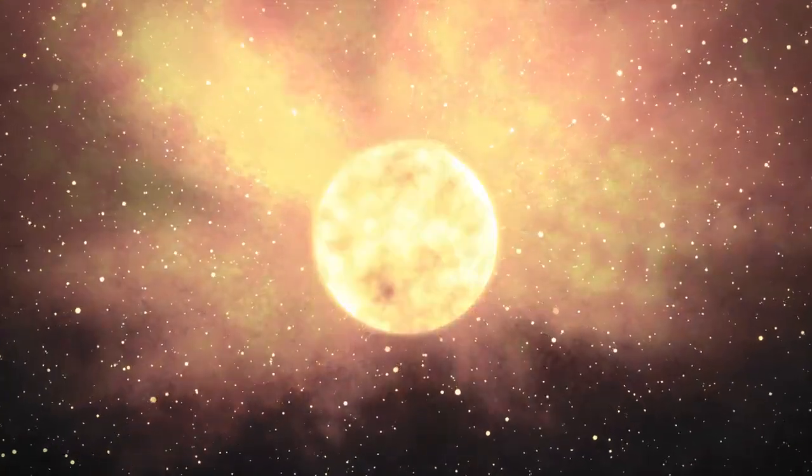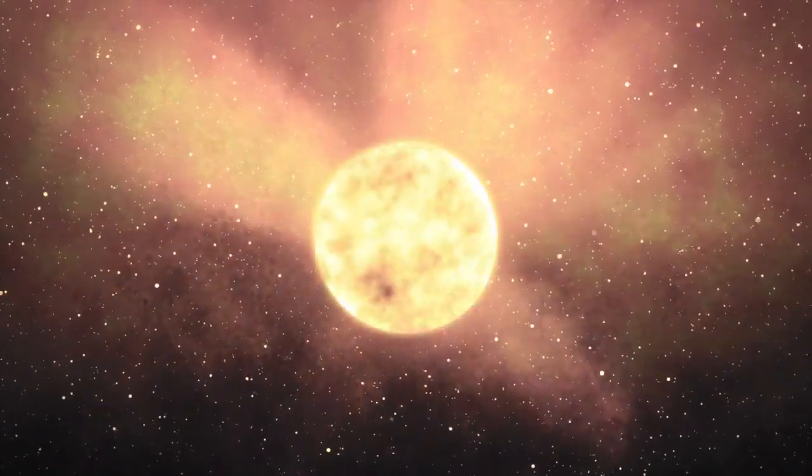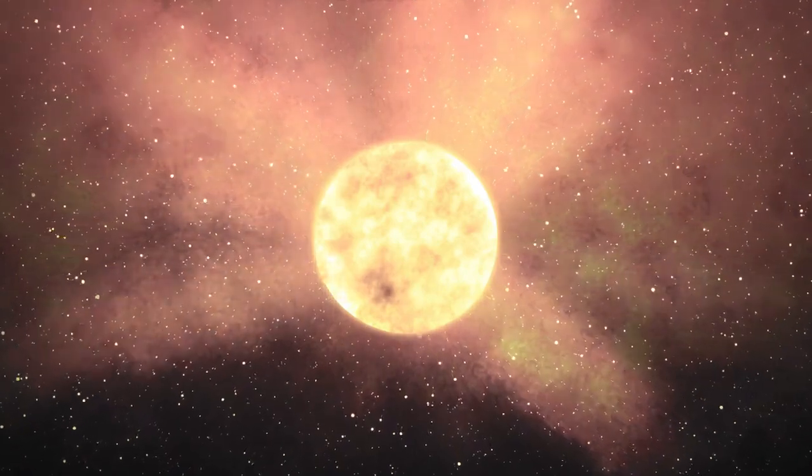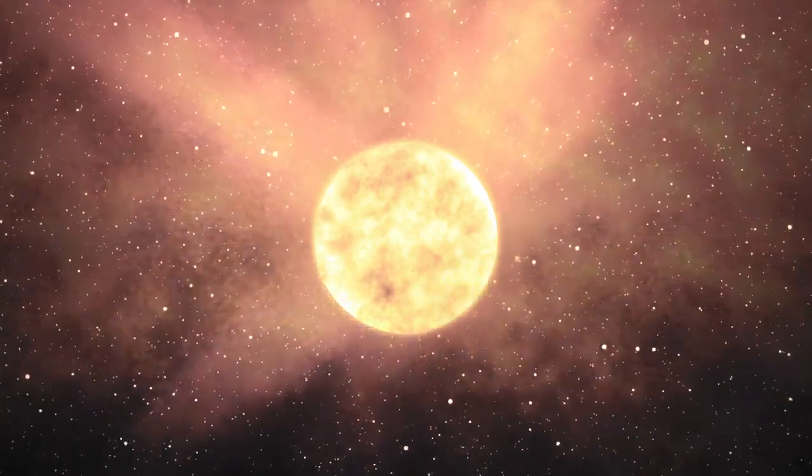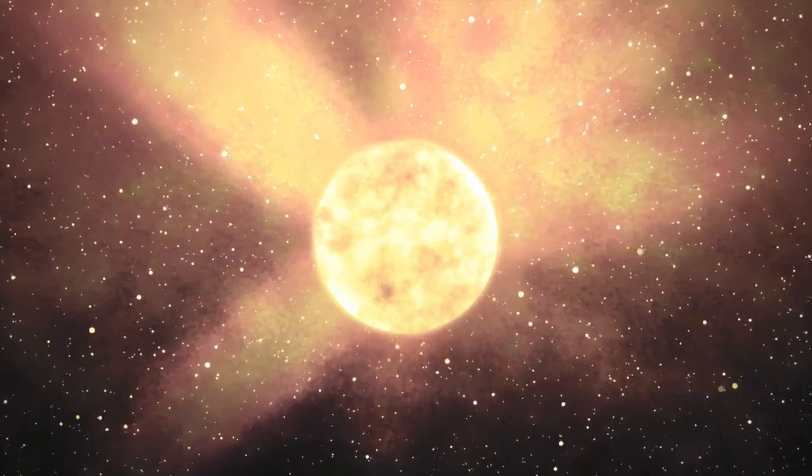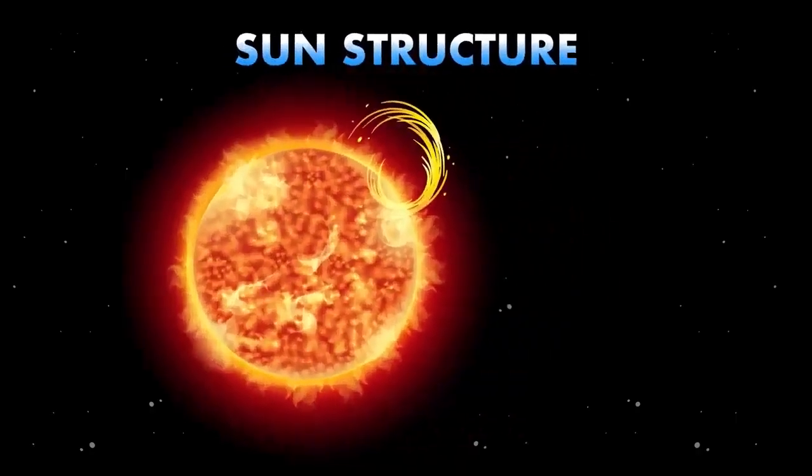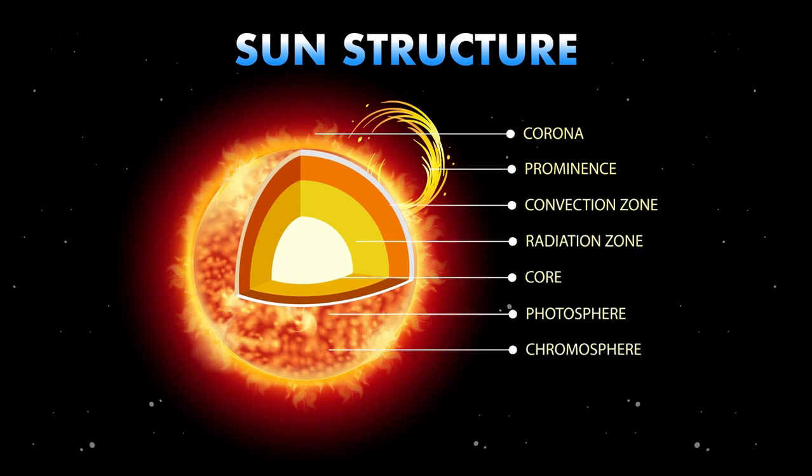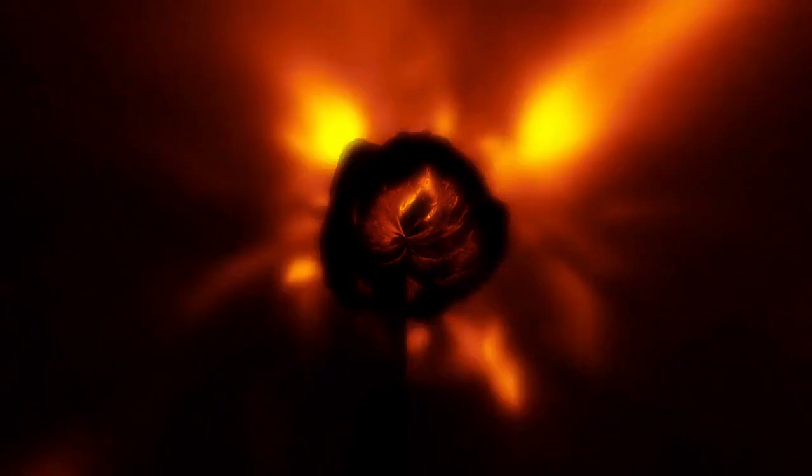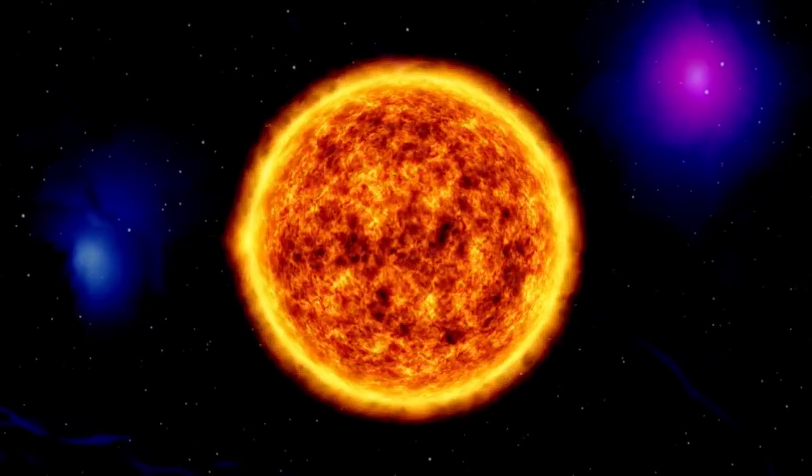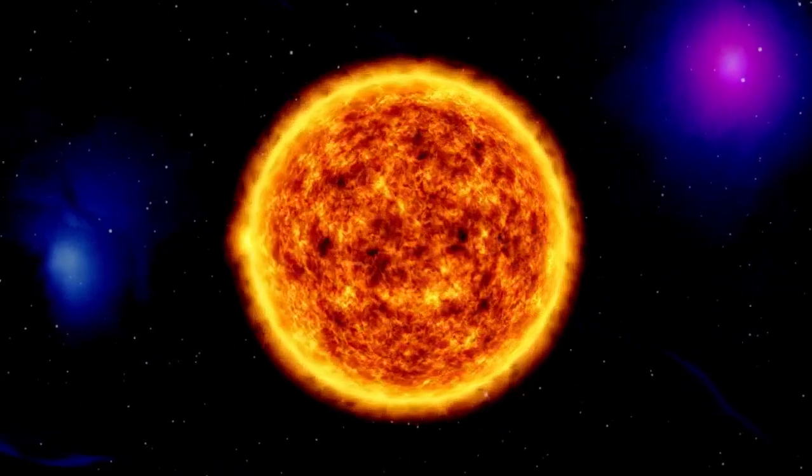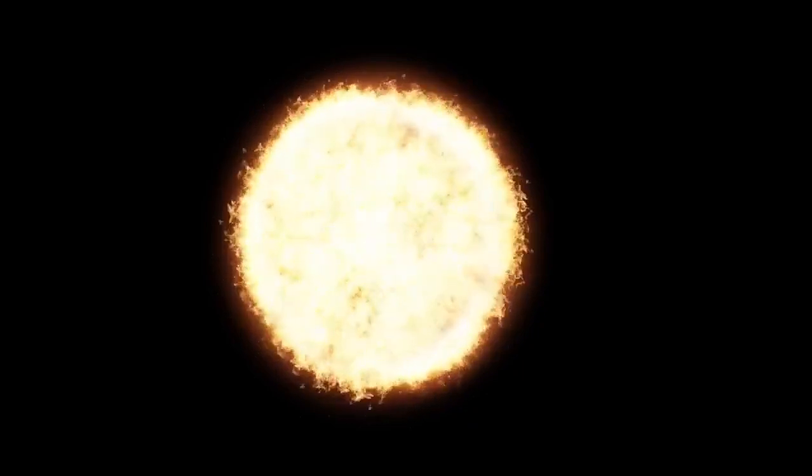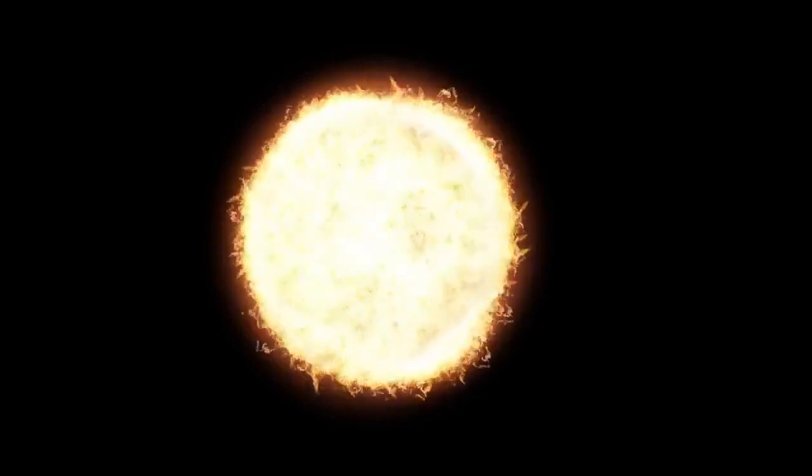As a red supergiant nearing the end of its life cycle, Betelgeuse is experiencing dramatic changes in its internal and external structure. The star is gradually exhausting its hydrogen fuel, a process with profound implications for its future. As hydrogen fusion slows in its core, the outer layers expand, causing the star to grow even larger. Simultaneously, helium accumulates around the core, triggering a secondary fusion process known as helium envelope burning. In this phase, helium atoms fuse to create heavier elements like carbon and oxygen, releasing bursts of energy that counteract the gravitational forces trying to collapse the star.